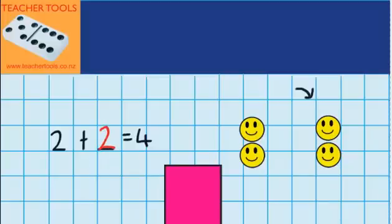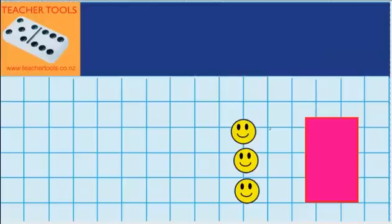Let's try another question. You can see over here I've got three counters. And under this rectangle there are some more counters. In total there are four counters. So, 3 plus what amount equals 4.